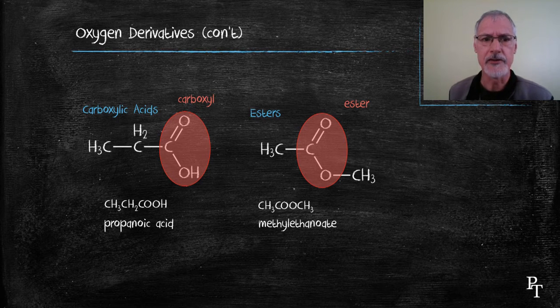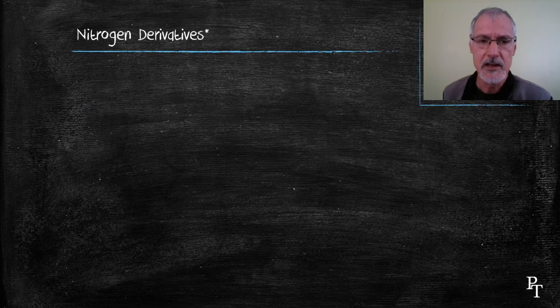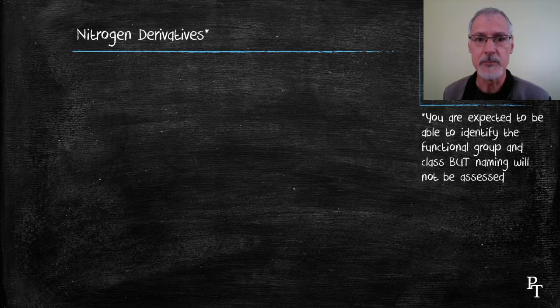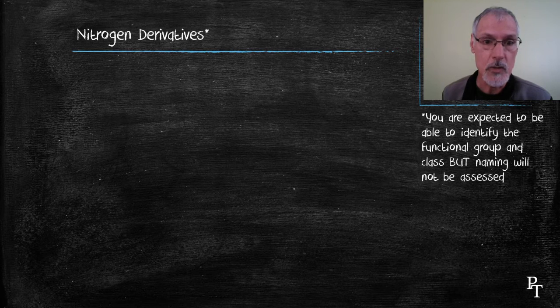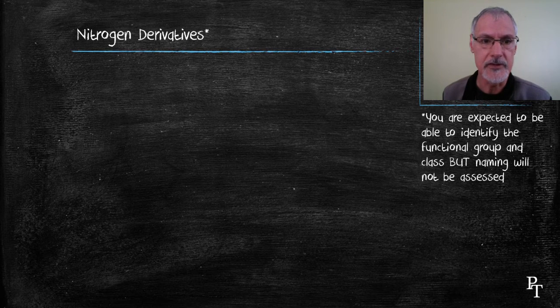The next group of compounds I want to go through, a little asterisk to note about them. IB expects us to be able to classify them and identify the functional group but we are not required to name these molecules so I'm going to skip the naming.